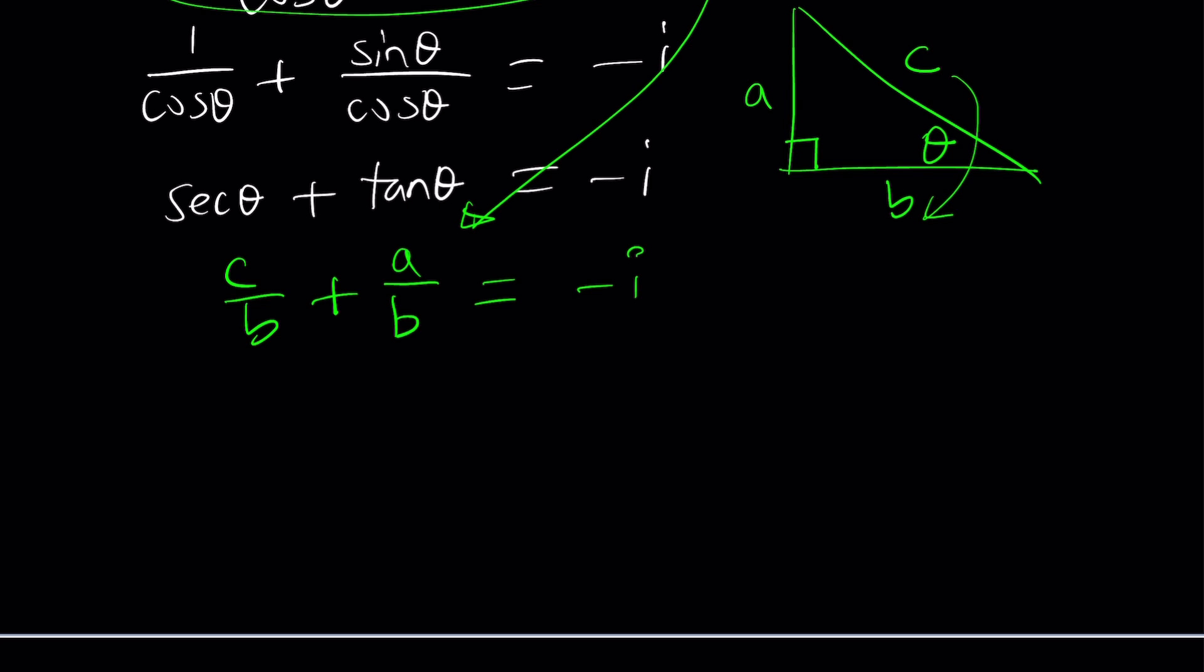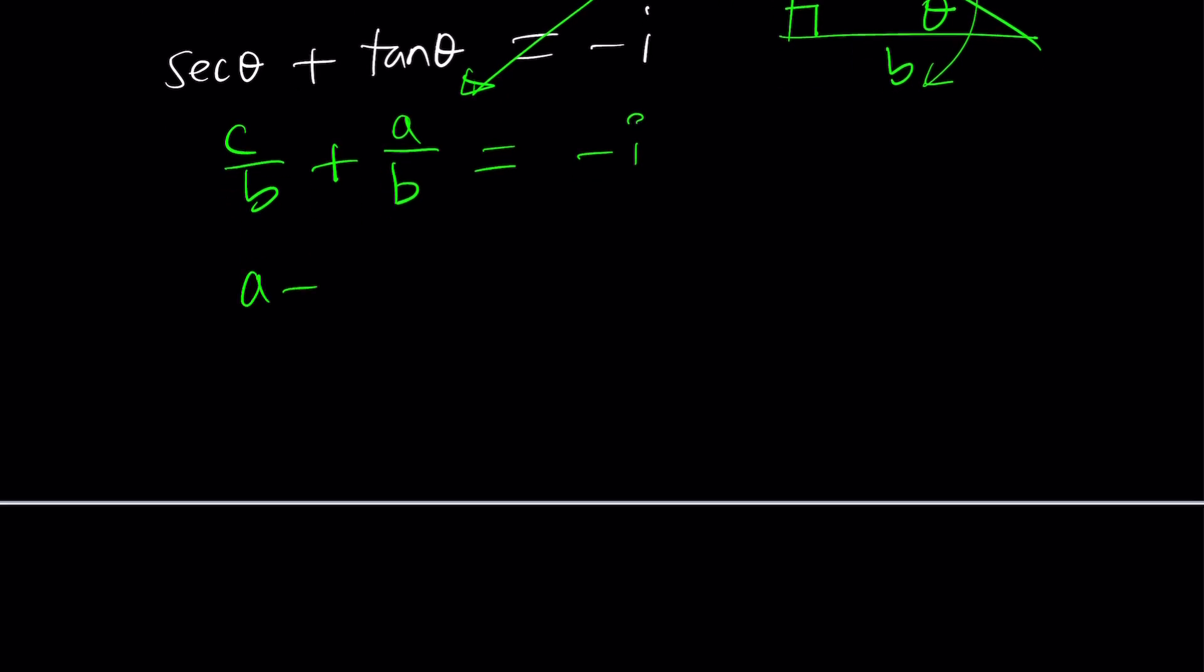Well too bad you could just take it from there. And this is equal to negative i. So what is so significant about it? Not really, unless you make a common denominator and cross multiply. That's the fun part. If you do that you're going to get a plus c equals negative ib. You could also write this as negative bi.